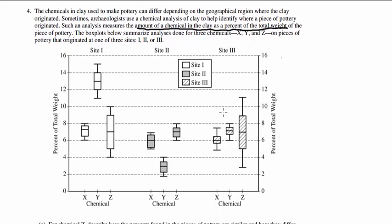The box plots below summarize analysis done for three chemicals X, Y, and Z on pieces of pottery that originated at site 1, 2, or 3.